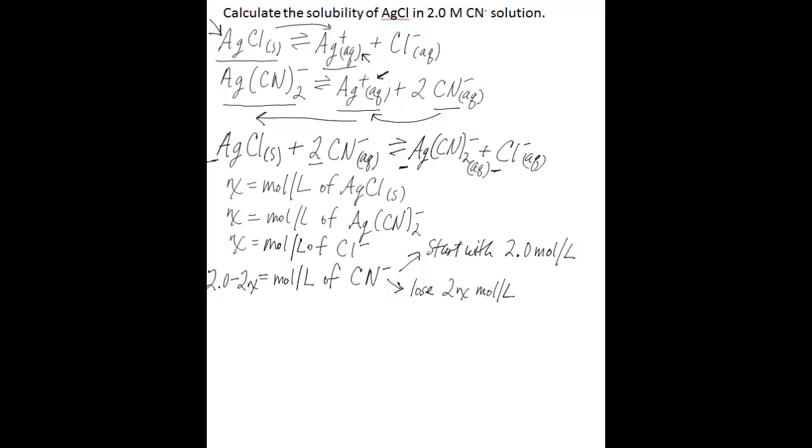Now that we have that, we can think about substituting all of these concentrations in terms of X into the K expression or the equilibrium expression. So let's write that out first. For this specific case, we have K is equal to products over reactants. So we'll have that complex ion multiplied by the concentration of chloride divided by the concentration of cyanide squared. So we have all of these three concentrations in terms of X, so if we can substitute all of those in, we can solve for X. But we also need to know K.